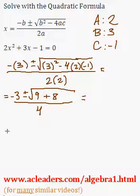And here, that's going to become negative 3 plus or minus the root of 17 over 4.